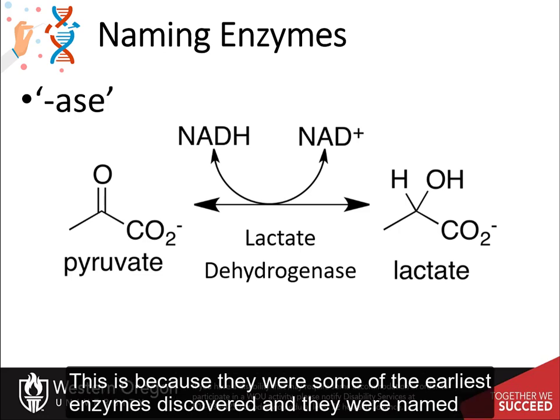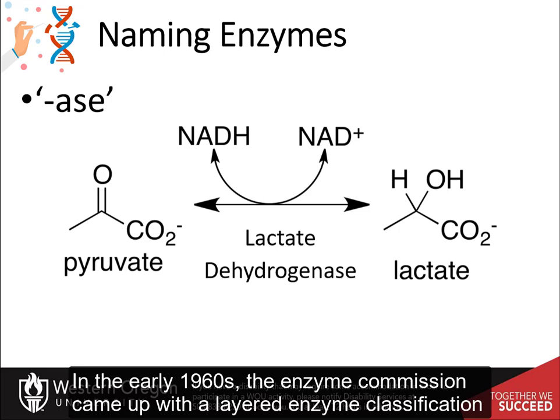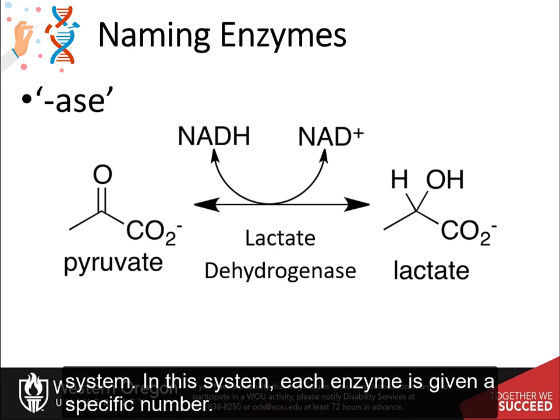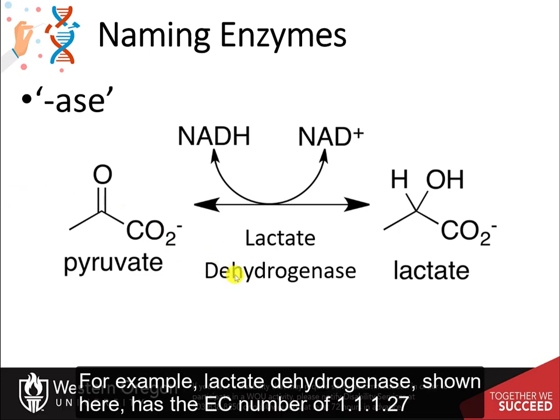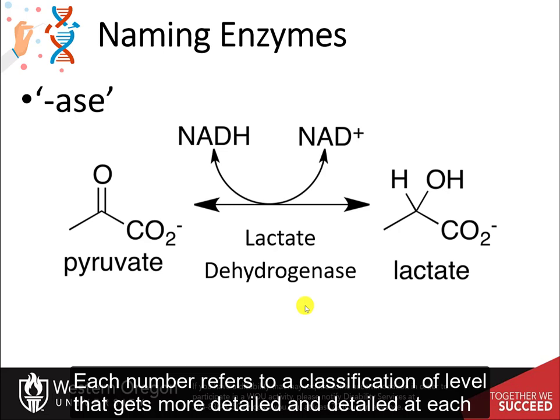Proteolytic enzymes were named before the -ase classification system was put into place. In the early 1960s, the enzyme commission came up with a layered enzyme classification system. In this system, each enzyme is given a specific number. For example, lactate dehydrogenase has the EC number 1.1.1.27. Each number refers to a classification level that gets more and more detailed at each step.